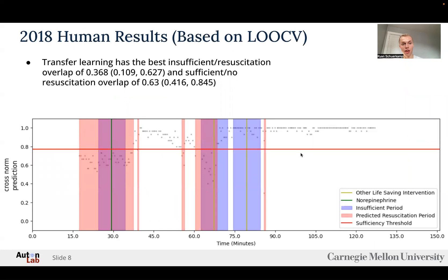For the humans — the 2018 humans specifically — we found transfer learning has the best overlap, with a resuscitation overlap of 0.368 and a no-resuscitation overlap of 0.63. We do want to get those a little bit higher in future work. The image below shows where the patient was given treatment in five-minute windows before and after (blue windows and green lines), and in red we are saying we need to resuscitate the patient. We have some overlap, but we need to improve it in future work.